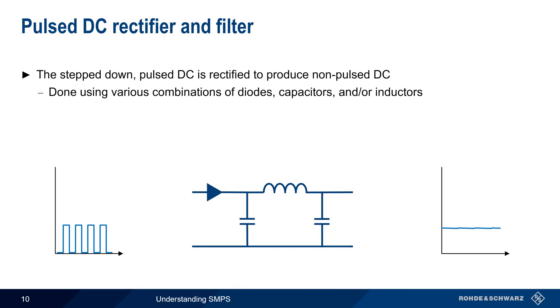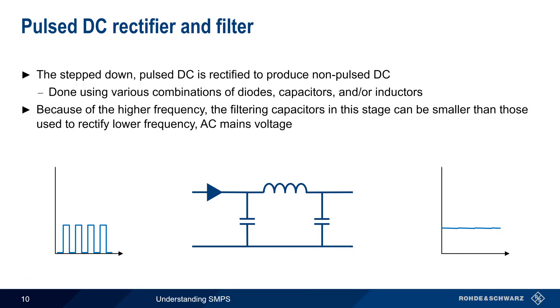Note that because of the relatively high frequency of the switched or chopped DC, the filtering capacitors used in this stage can be considerably smaller than those that are used to rectify lower frequency mains voltage.